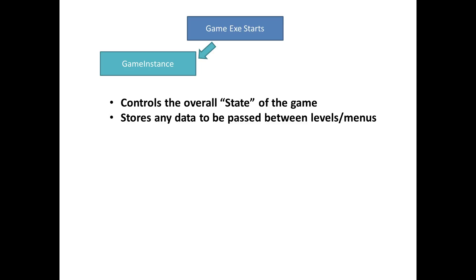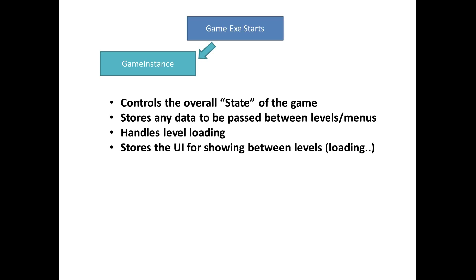Since levels can destroy other levels with no persistence between them, we need to store any data that needs to be passed between levels or menus in this game instance class blueprint. I'm going to have the game instance handle level changing and the level loading itself. There's a problem: when you call open level it destroys the existing one, which might have the main menu user interface — so what UI do we show in the meantime? What I'm going to do is store the user interface for the loading screen inside the game instance class.